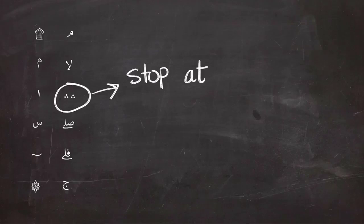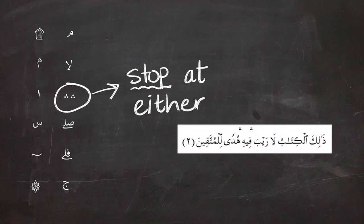The three-dotted symbol means you can't stop at either of them, but you have to stop at one and not the other. In the second ayah of Surah Al-Baqarah, you are allowed to stop at the first one.